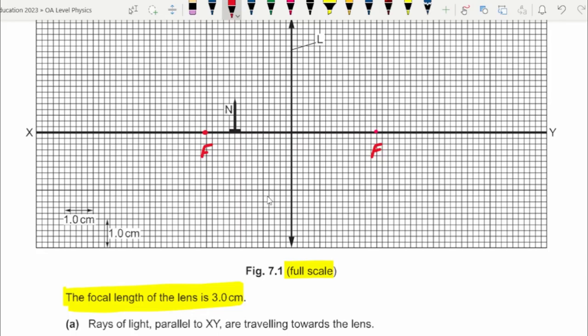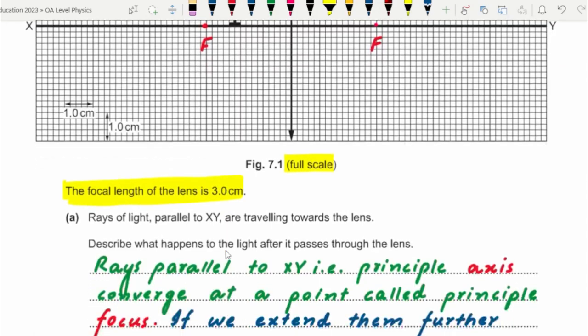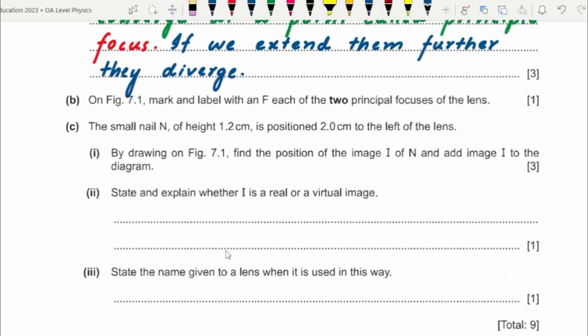The distance between the principal focus and the center of the lens is three centimeters — that is the given focal length — so we use this to mark the principal focus on both sides of the lens.